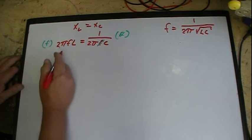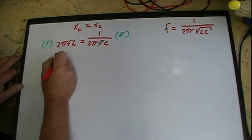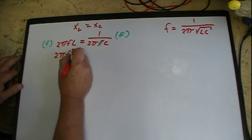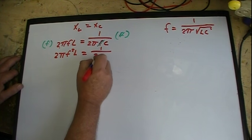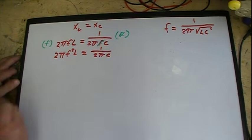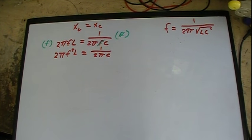What that does is these cancel out, and these two multiply together. So now I've got 2 pi f squared L equals one over 2 pi C.